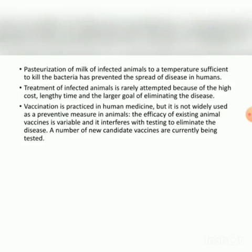Vaccination is practiced in human medicine but is not widely used in animals. The efficacy of existing animal vaccines is variable and it interferes with testing to eliminate the disease. A number of new candidate vaccines are continually being tested.